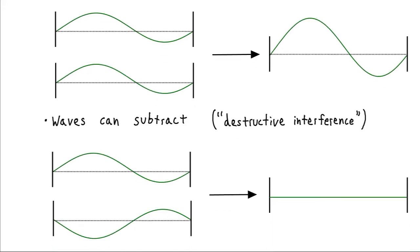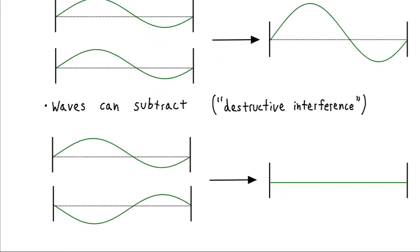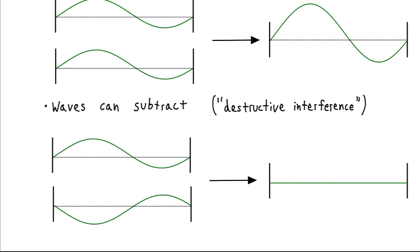Waves can also subtract, which is called destructive interference. And so now imagine that one of these people pulling on our jump rope pulls in the up direction. That would give us this wave. Or maybe they pull in the downward direction. That would give us this wave.